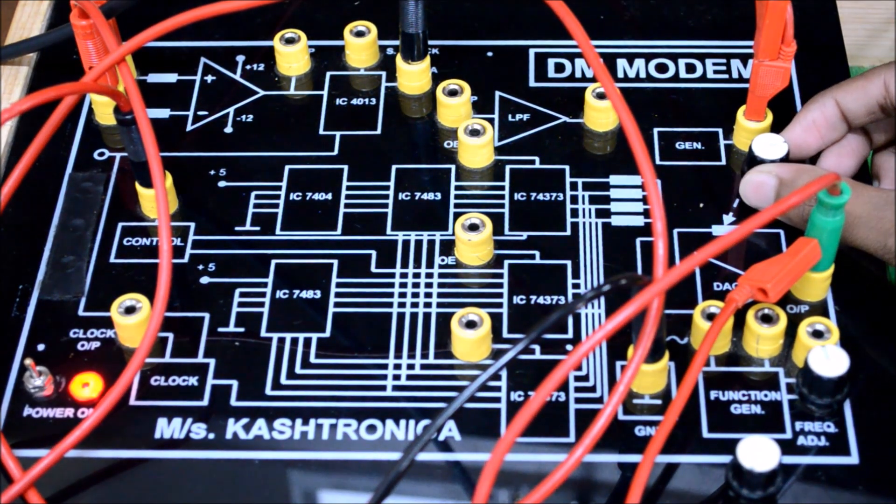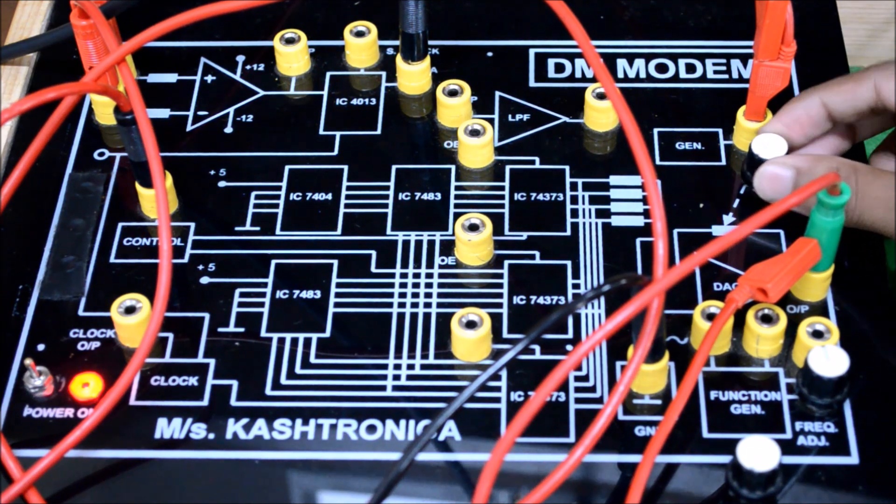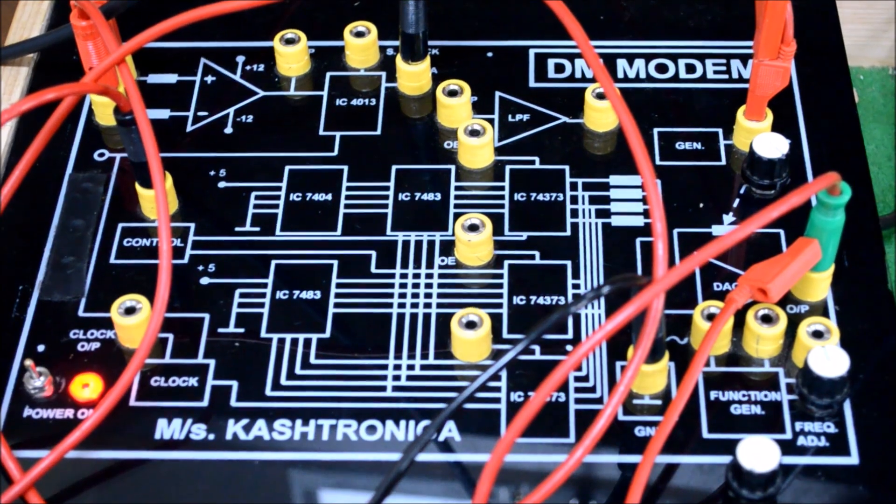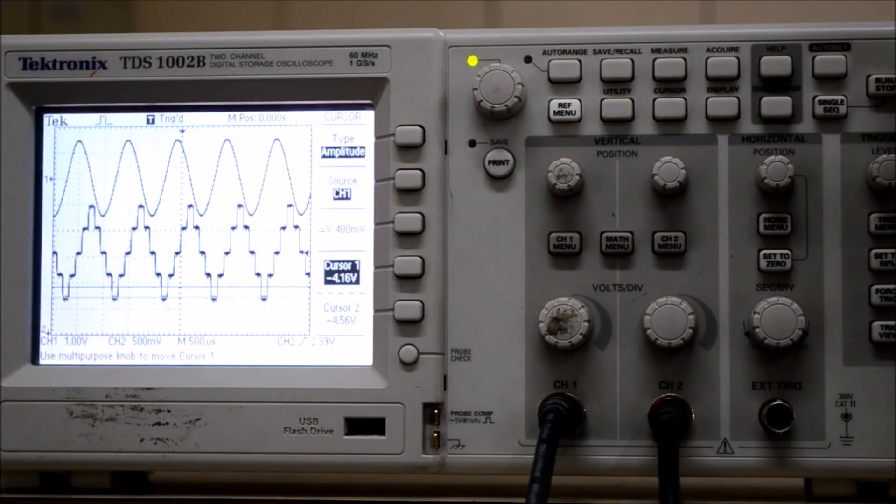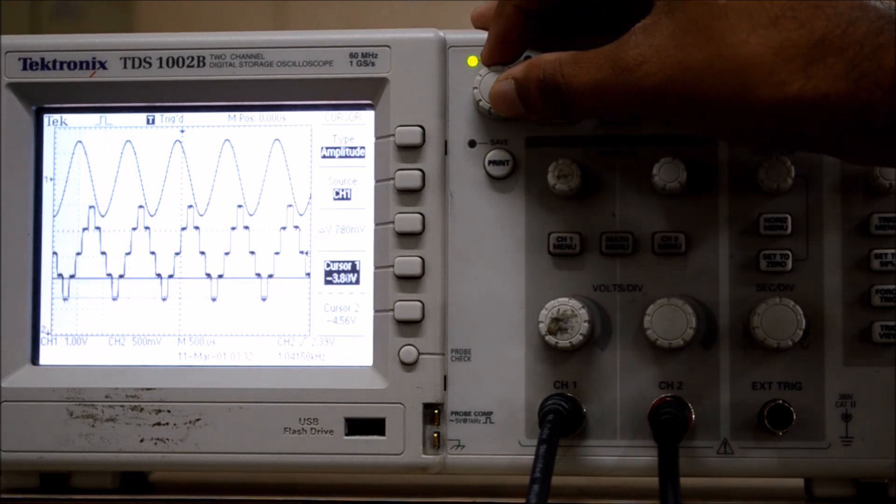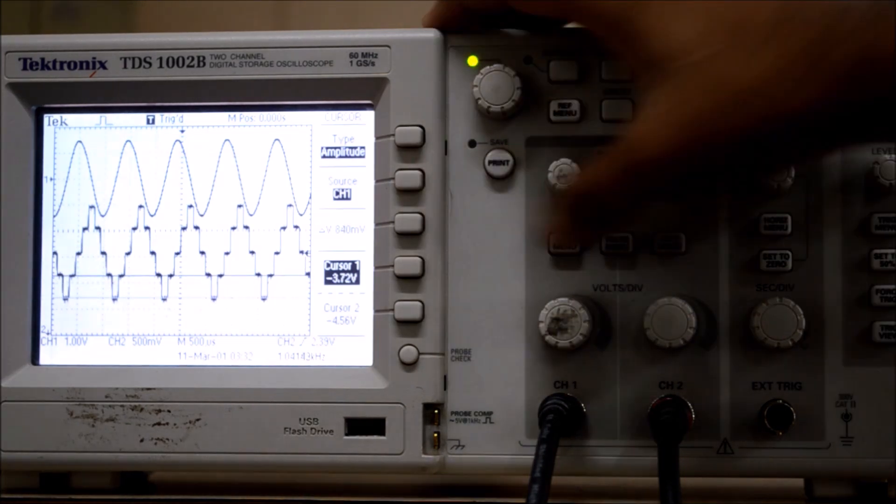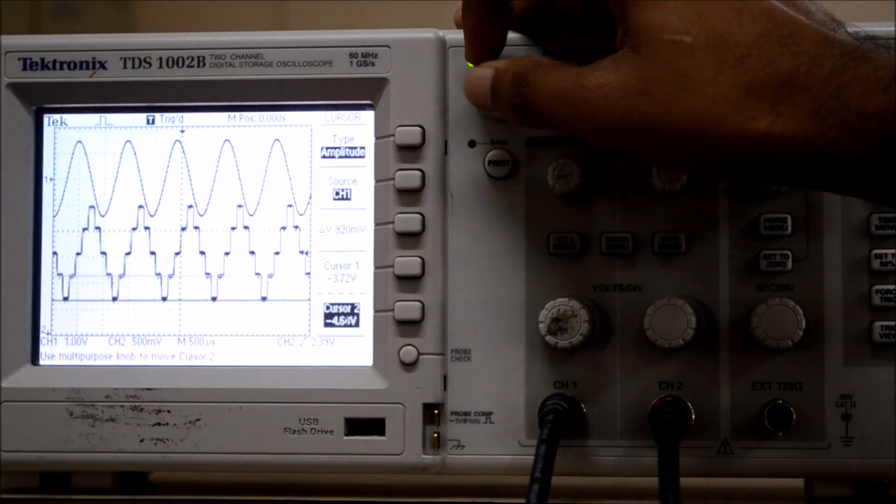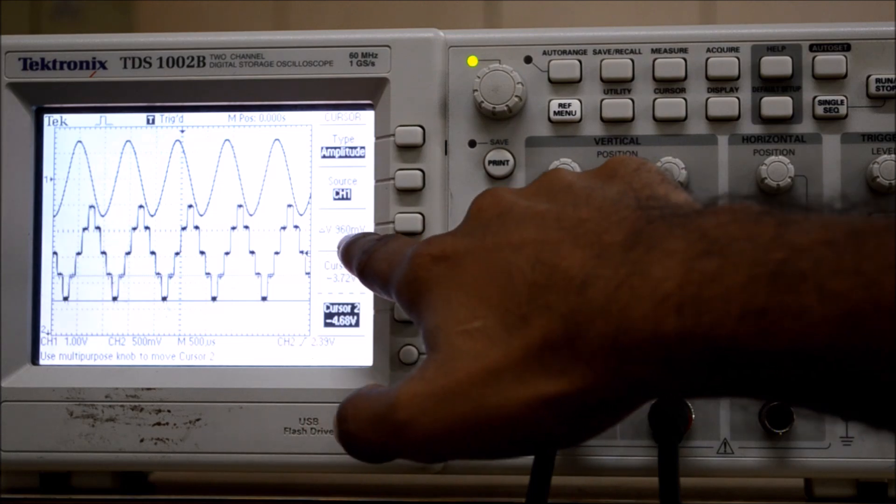Now if you change the pot in counterclockwise direction to the maximum value. Here, if we measure, we can see that the maximum value of step size is 960mV.